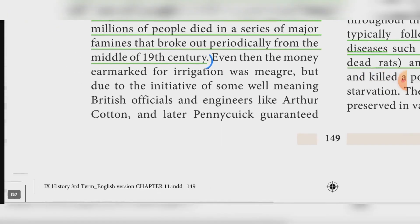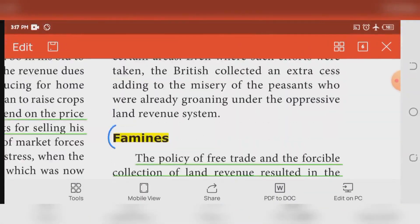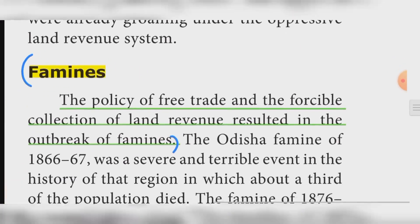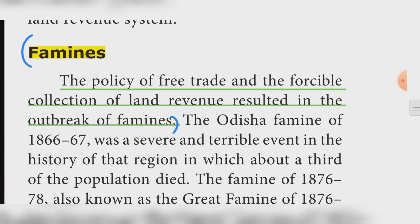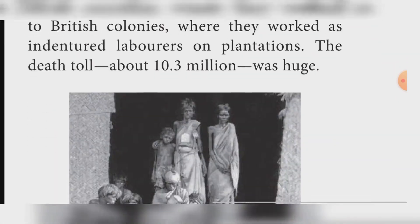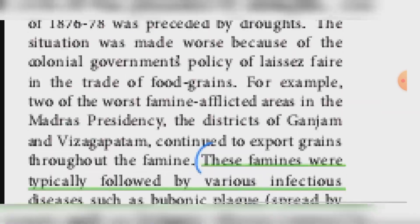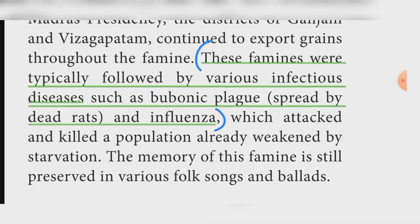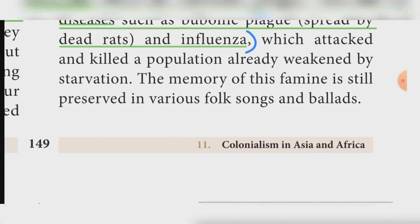Free trade policies and the forcible collection of land revenue resulted in the outbreak of famines. These famines were typically followed by various infectious diseases such as bubonic plague — spread by dead rats — and influenza.